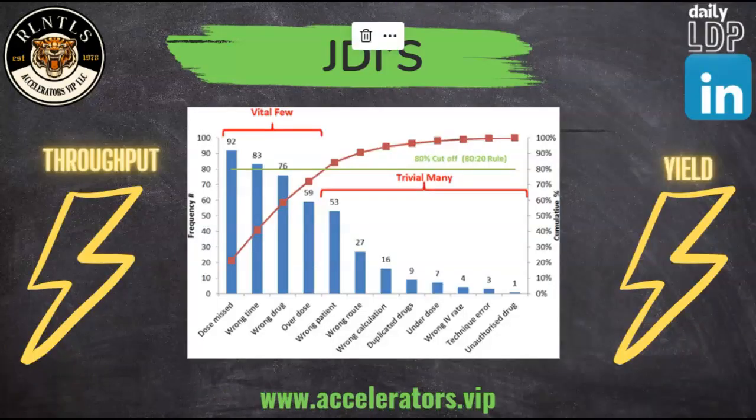What do JDIs help solve for? This is a Pareto chart — a fancy Pareto chart. Pareto charts are used to measure data sets, commonly failure modes, defects, setbacks — things that are not supposed to happen. A Pareto chart helps you capture that data over time so you can see what is truly negatively impacting yield and throughput.